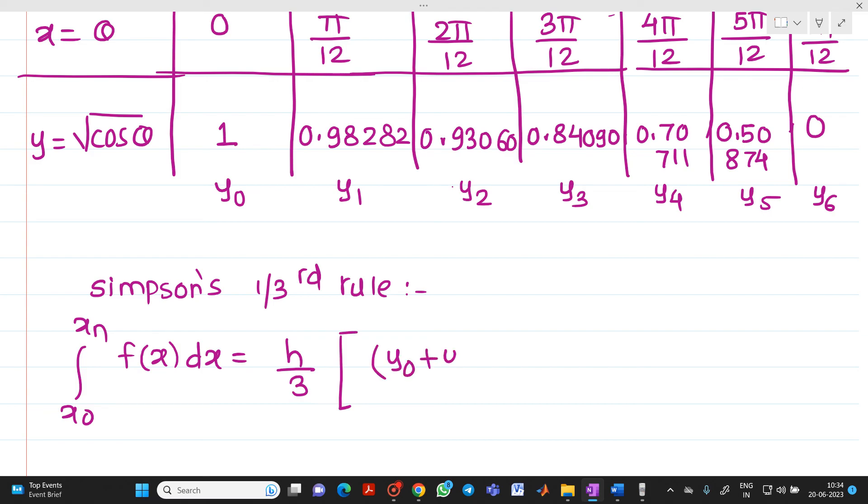plus 4 times sum of odd ordinates of y, that is y₁ plus y₃ plus y₅